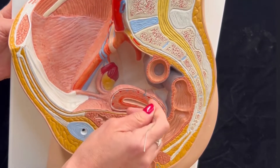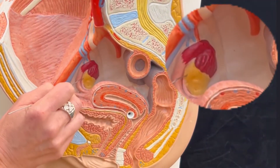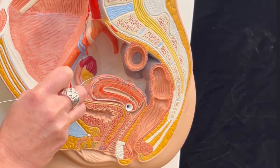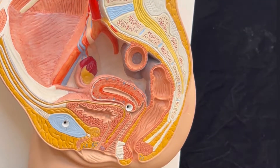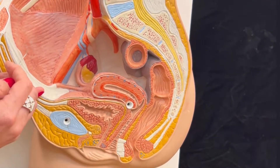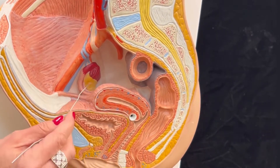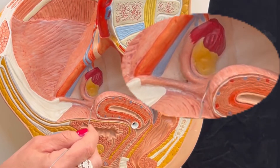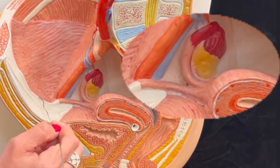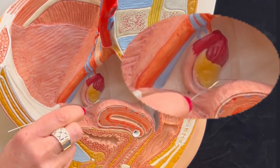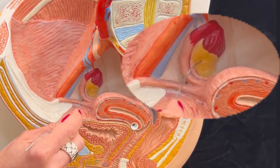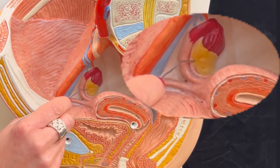If we look here, this is the uterus, and we see right here this yellow structure — this is the ovary. The uterus is within the pelvic cavity and needs to be supported by several ligaments to keep it in place. We have a ligament that goes from the uterus to the anterior abdominal wall; this ligament is named the round ligament. Then we have a ligament from the uterus to the ovary, which is the yellow structure — this is the ovarian ligament.